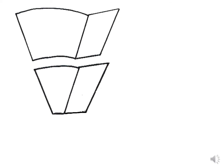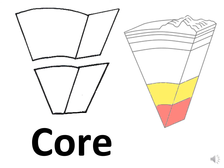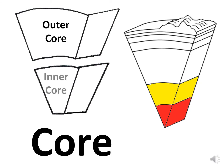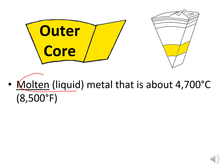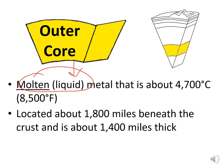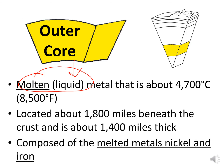Now let's look at the core. We have the outer core and the inner core. The outer core is molten liquid, located about 1,800 miles beneath the crust and about 1,400 miles thick. It's composed of melted metals such as nickel and iron.